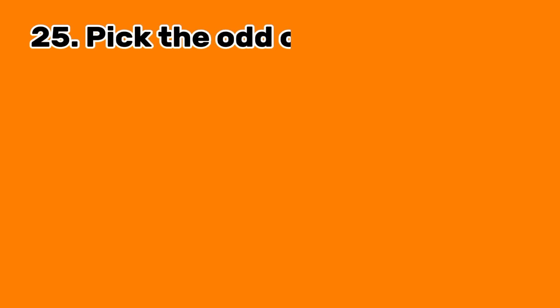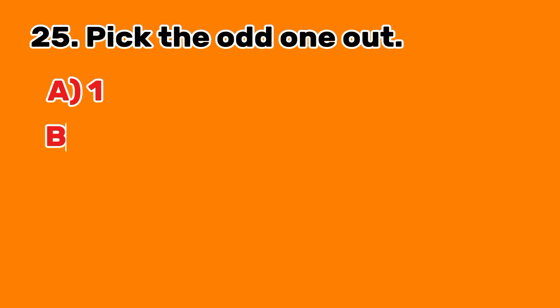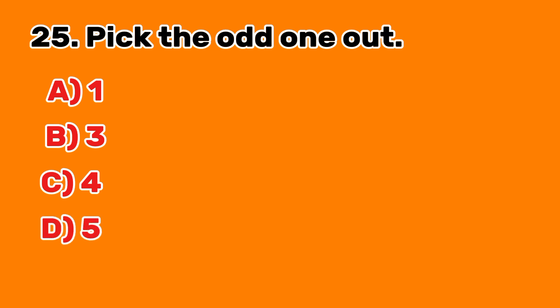Question 25: Pick the odd one out. A. 1. B. 3. C. 4. D. 5. Answer C: 4.